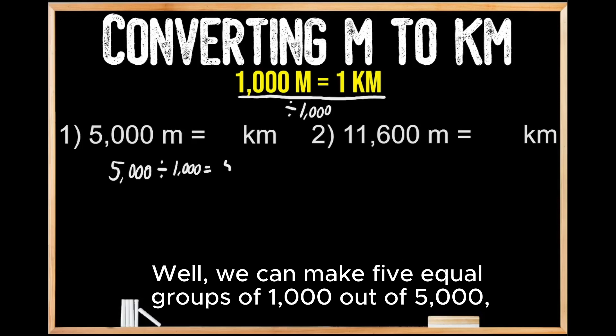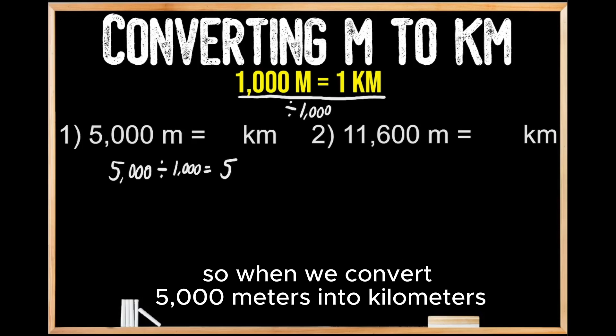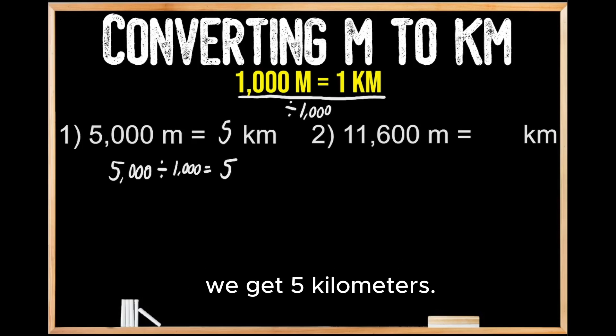Well, we can make five equal groups of 1,000 out of 5,000. So when we convert 5,000 meters into kilometers, we get 5 kilometers.